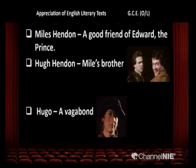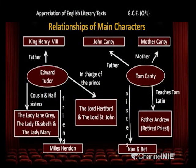Miles Hendon is a good friend of Edward the Prince. Hugh Hendon, Miles' brother, is his evil brother. Hugo is a vagabond who always ill-treated the Prince. Here we can see the relationships among these characters. Edward Tudor — King Henry VIII is his father; Lady Jane Grey is his cousin; Lady Elizabeth and Lady Mary are his half-sisters; Miles Hendon is his friend; Lord Hertford and Lord St. John are in charge of the Prince.